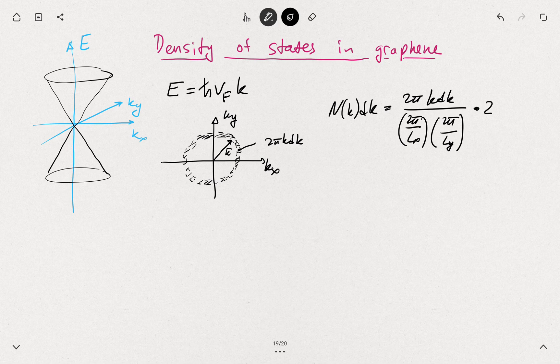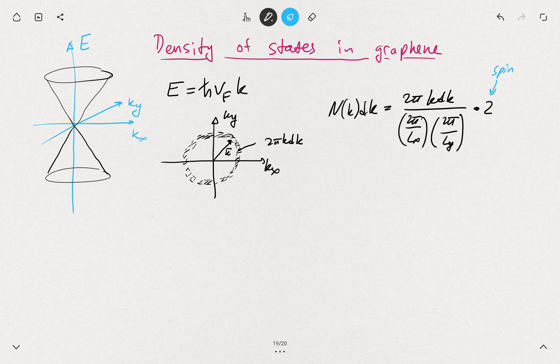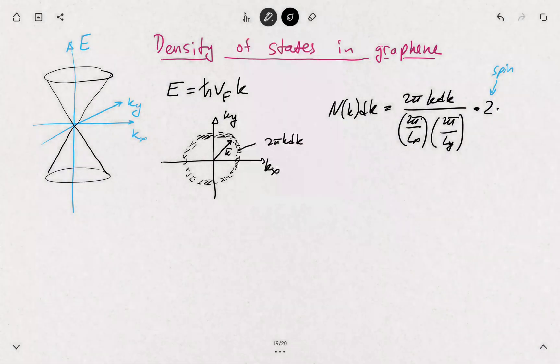Then we multiply it by 2, that's because of spin. And then we also multiply it by another 2, that's because of another degree of freedom called valley.